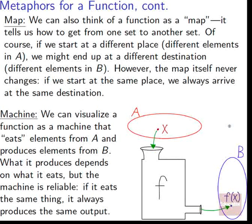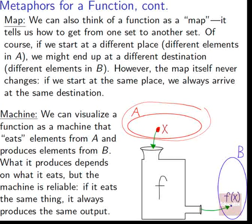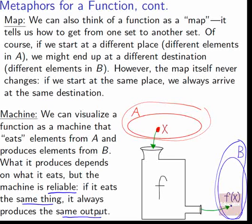One last way to visualize it is the idea of a machine. We can visualize a function as a machine that eats elements from A and produces elements from B. What it produces depends on what it eats, but the machine is reliable: if it eats the same thing, it always produces the same output. If we shove x into our machine f, it crunches it and spits out f of x. If we put in x, it will always spit out f of x — the first time, the second time, the fiftieth time.